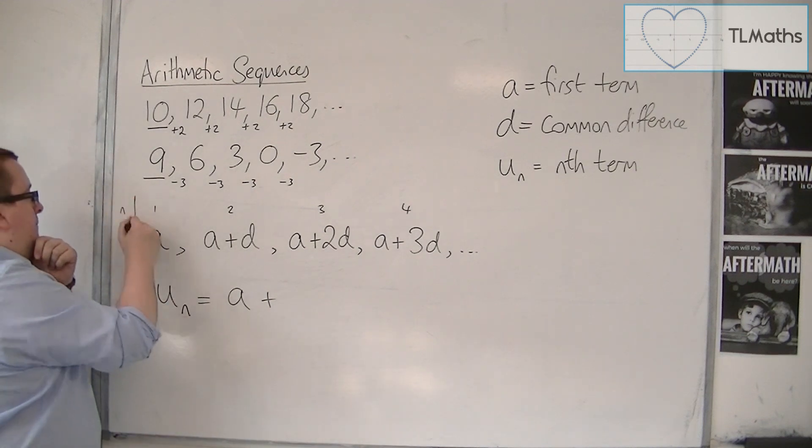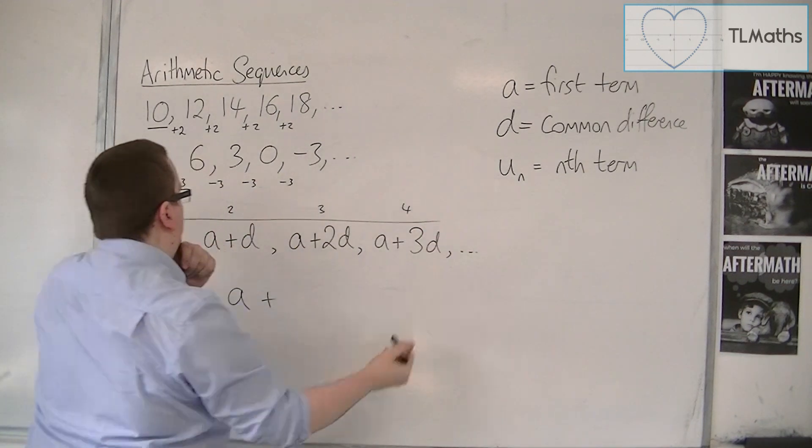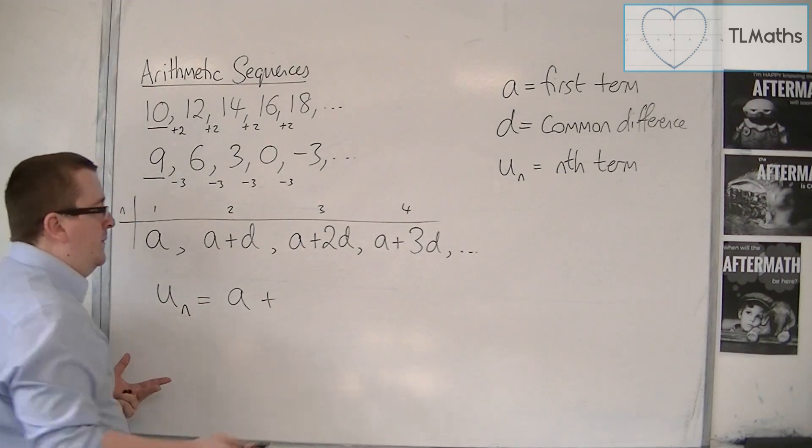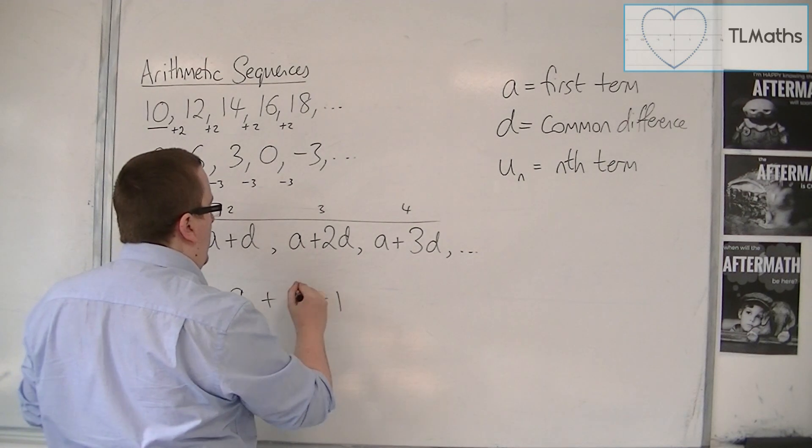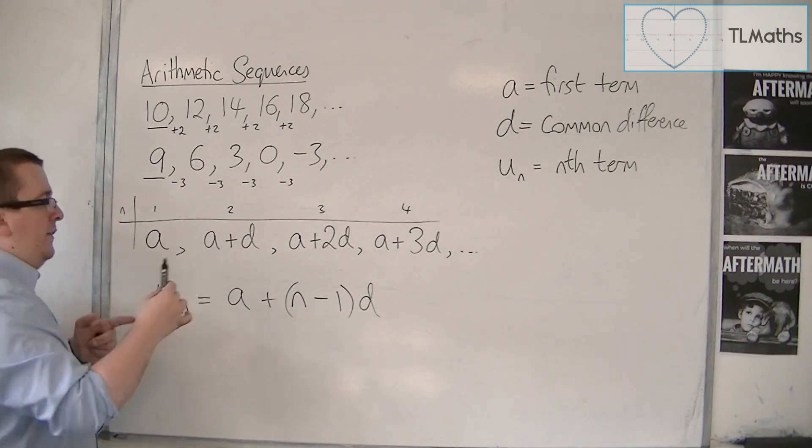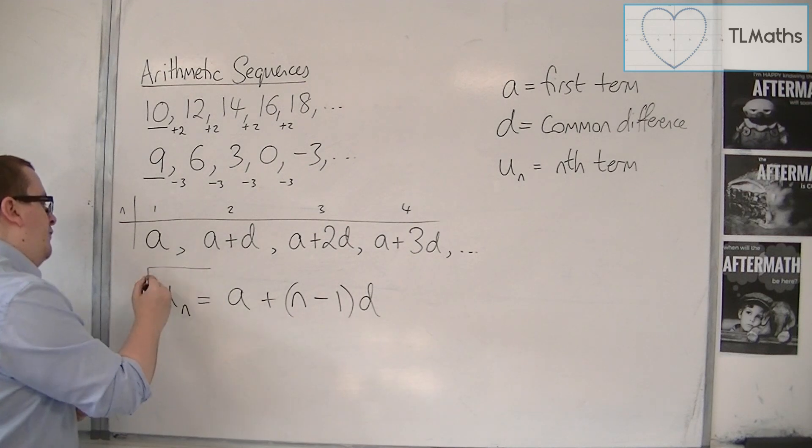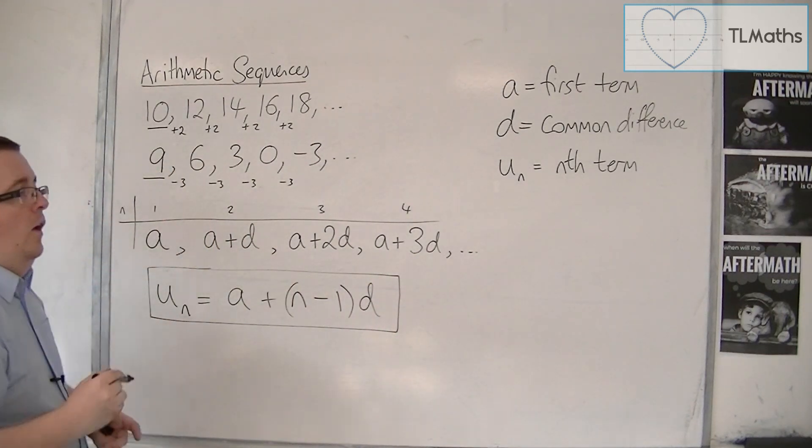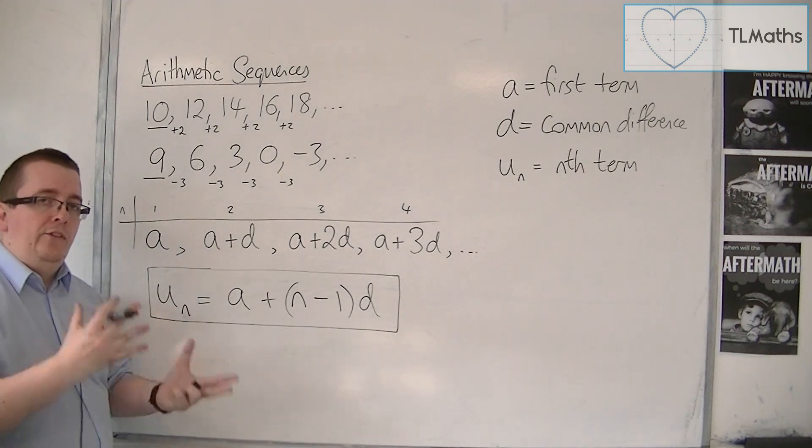So if this is my position, n, then because I'm always one less than the position, then I'm n minus 1 lots of D. And this is the formula for the nth term of an arithmetic sequence.